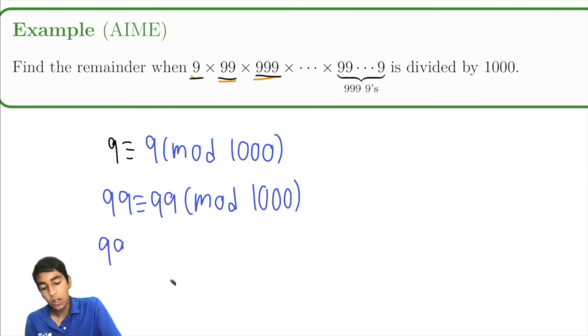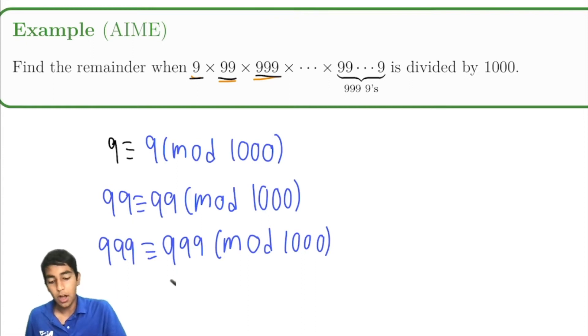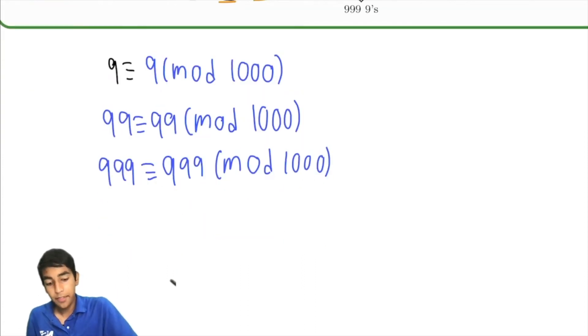999 leaves the remainder of 999 when divided by 1,000, but it can also be written in terms of negative mods. What does that mean by negative mod? This is the same thing as negative 1 mod 1,000. Now you might be thinking, negative? You can have negative numbers as remainders?